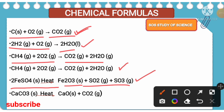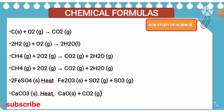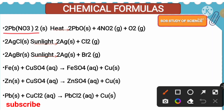Here, many things can be asked: they can ask you to balance, they can give the word equation and ask you to write it as a chemical equation, or they can ask when ferrous sulfate is heated, name the toxic gases released — the toxic gases released here are sulfur dioxide and sulfur trioxide. Moving to next: calcium carbonate, when we heat it, we get calcium oxide and carbon dioxide is also released. Then, when we heat lead nitrate, we get lead oxide, nitrogen dioxide, and oxygen. When we heat lead nitrate, brown color fumes are released — those brown color fumes are nothing but nitrogen dioxide. This is an example for the thermal decomposition reaction.